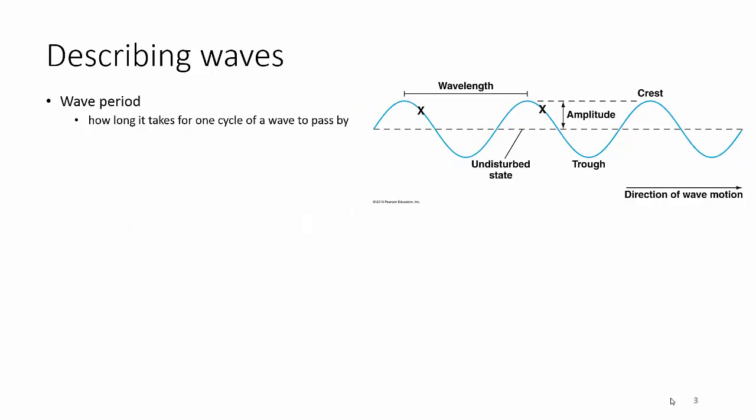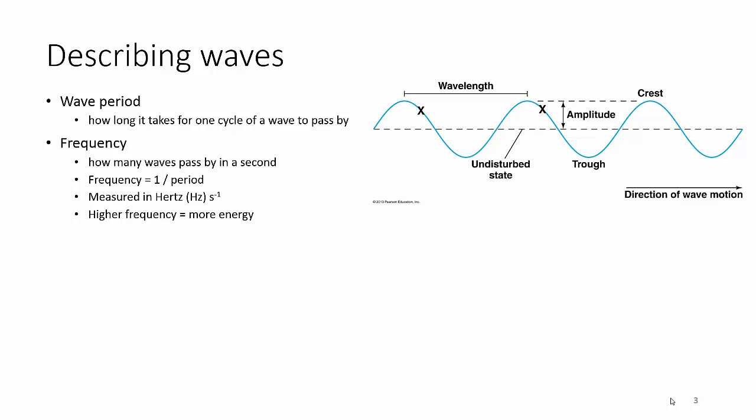Wave period is how long it takes for one cycle of the wave to pass by. That's usually pretty fast, so we talk about frequency instead. Frequency is how many waves pass in one second. You stand there with a timer, set it for one second, and count — it's easiest to count the crests or the troughs.